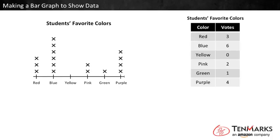To understand how a bar graph works, let's start with a line plot and turn it into a bar graph. Here's a line plot showing this data. On the line plot the categories are listed along the bottom, and above each one there's a stack of X's. Each X stands for one student that voted for that color.